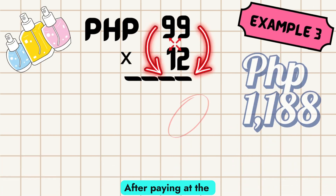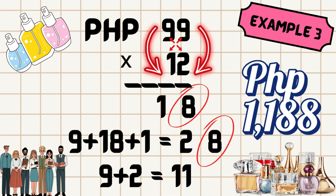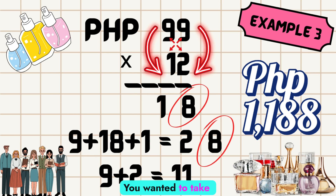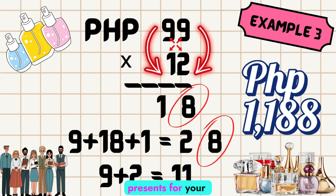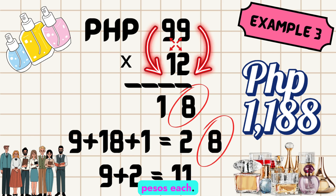After paying at the cashier, she gave you a voucher worth 50% off for a minimum of 1,000 pesos on your next purchase. You wanted to take advantage of the offer and decided to buy presents for your friends as well. You have 12 close friends and decided to get them a plushy which is selling at 99 pesos each.